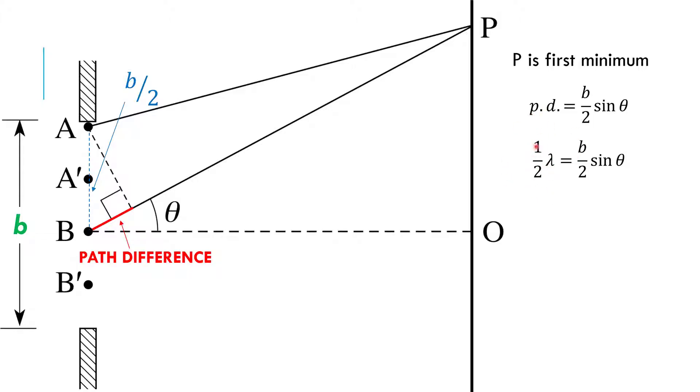It could be 1½ wavelengths or 2½ wavelengths or 900½ wavelengths. But since this is my first minimum, over here, the path difference is 0. Path difference increases and increases and increases until half a wavelength. That's the first time I'll see the dark spot.